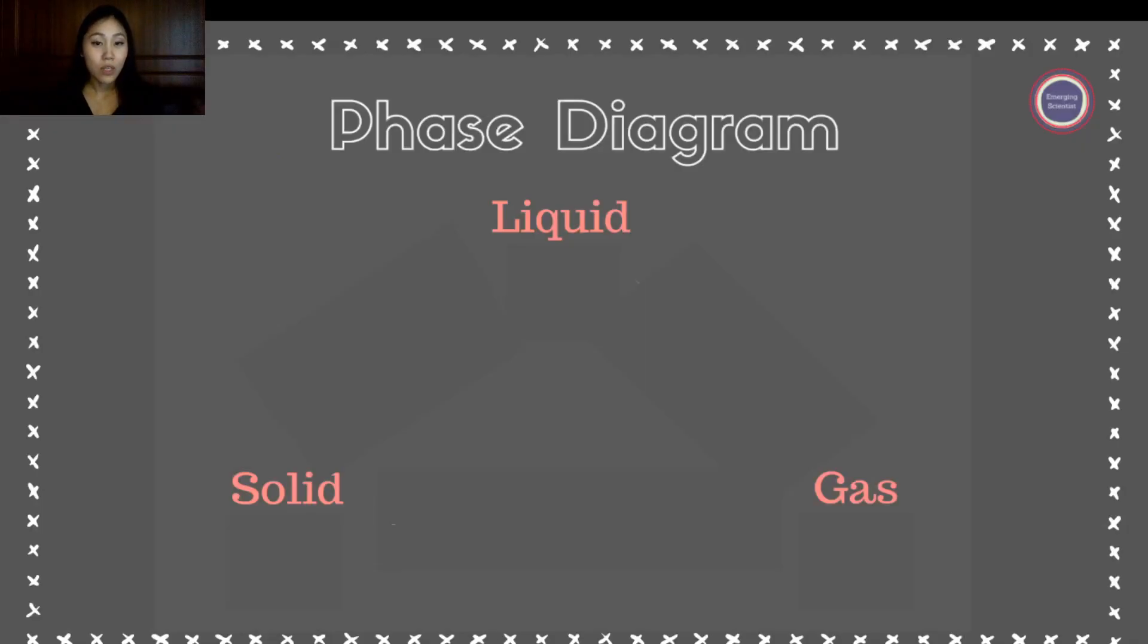The phase diagram, as you guys may have already seen, shows solid, liquid, and gas with these three different types of microscopic views. The first phase that we're going to look at when we go from solid to liquid, that phase is known as melting.